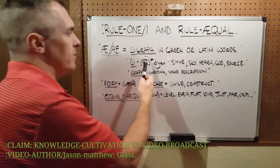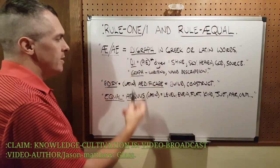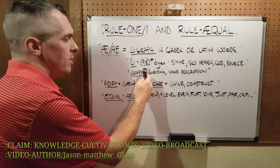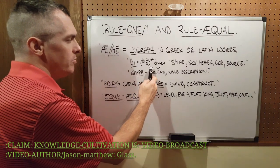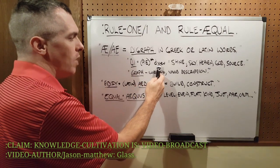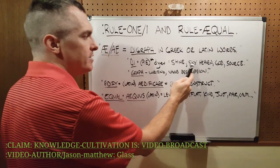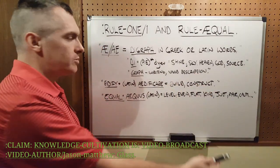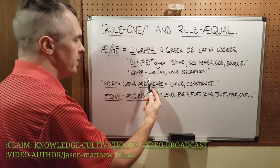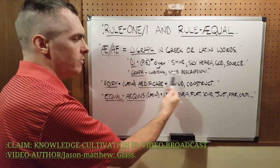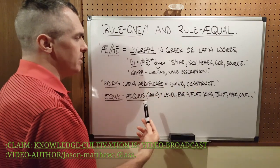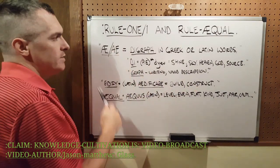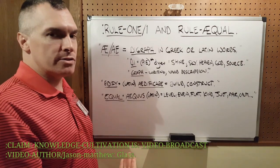So what is a digraph? In Greek or Latin words, 'die' — from the Proto-Indo-European root D-Y-E-U — means shine, sky, heaven, God, i.e., source. And then 'graph,' of course, is writing or vivid description. So a digraph is a vivid description of a source.